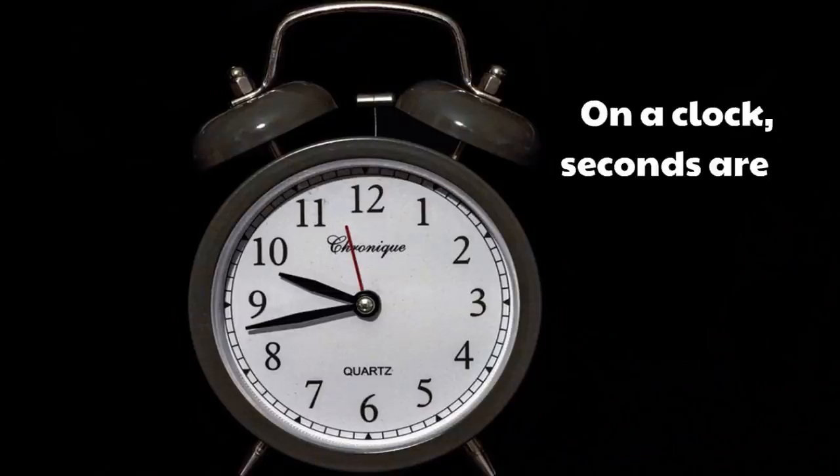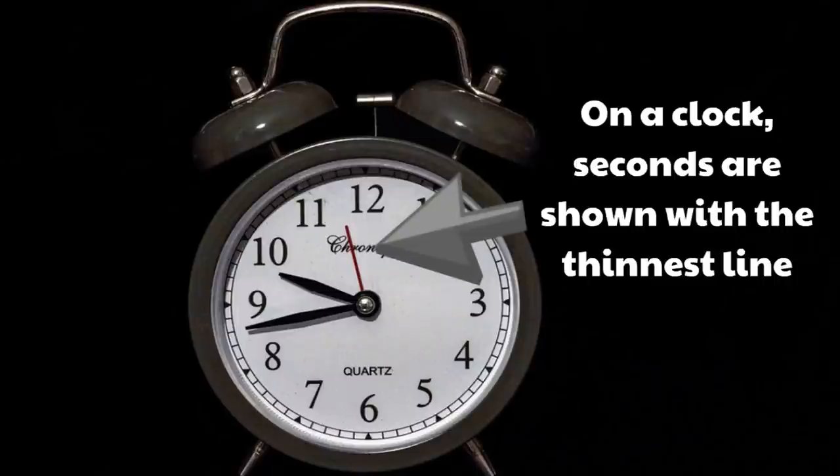On a clock, seconds are shown with the thinnest line. It's also the line that moves the fastest because seconds are the shortest period of time.